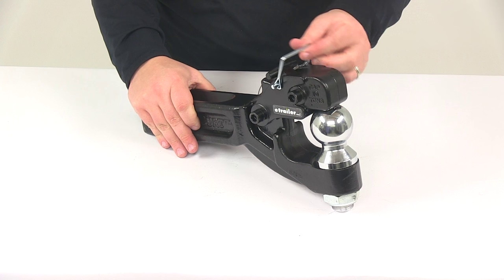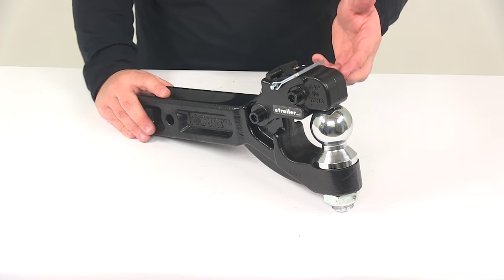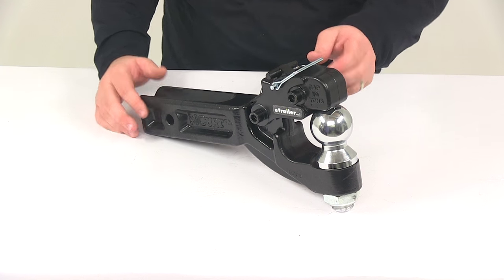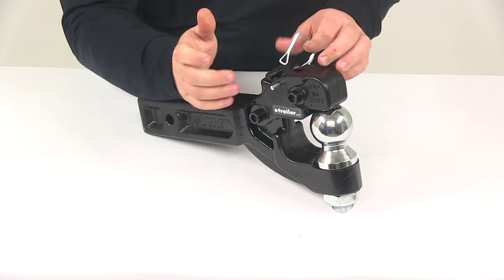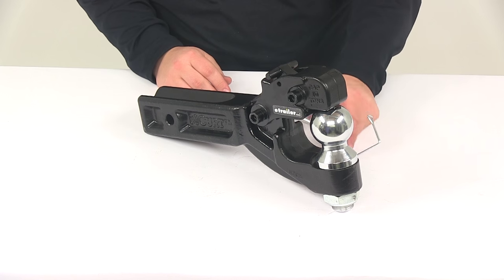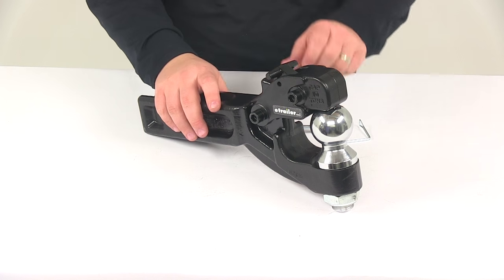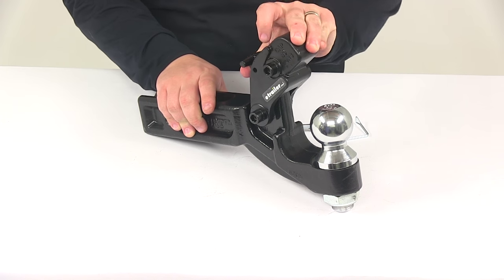Here up top we have the tethered safety pin, which is included for the pintle hook. If you want to raise this up when connecting your lunette ring or when you just want to use it as the 2 and 5/16 inch ball, pull that out. What I mean by tethered is it has a little cable that keeps it connected so you don't have to worry about misplacing it. Lift up on this T lever here and then pull back on the unit.